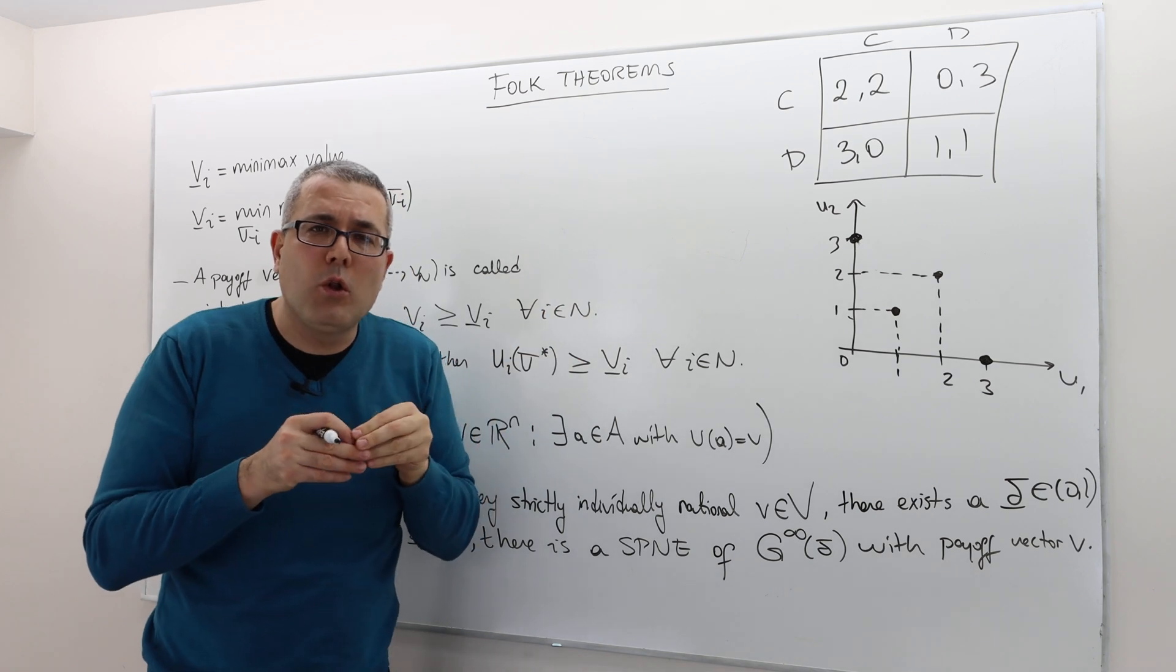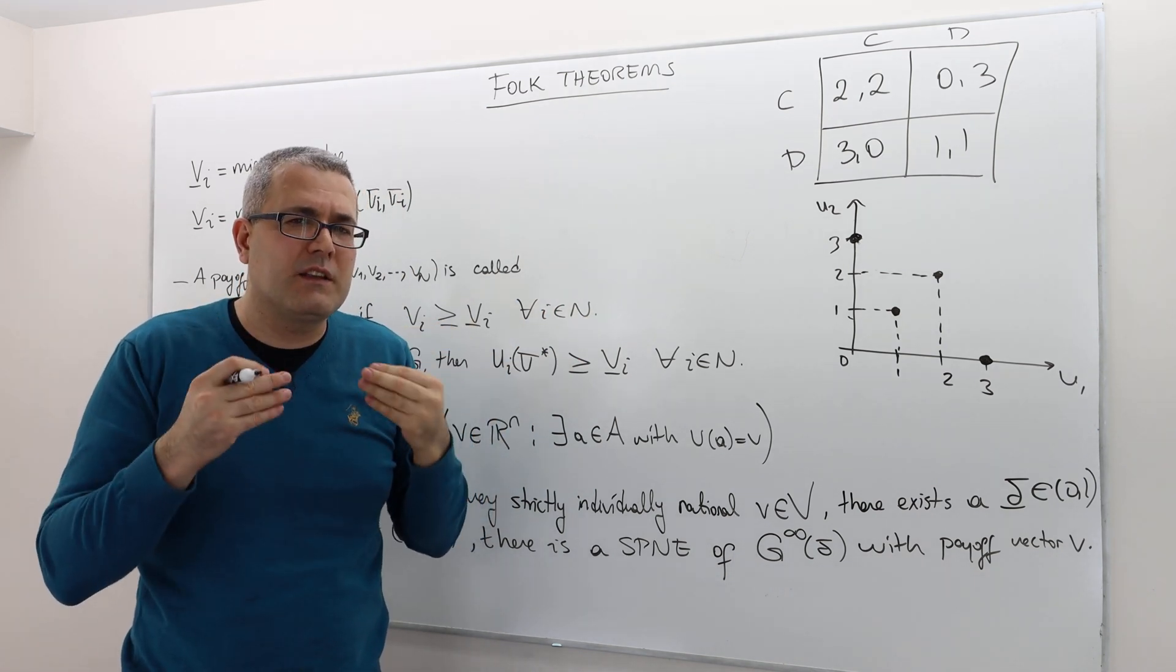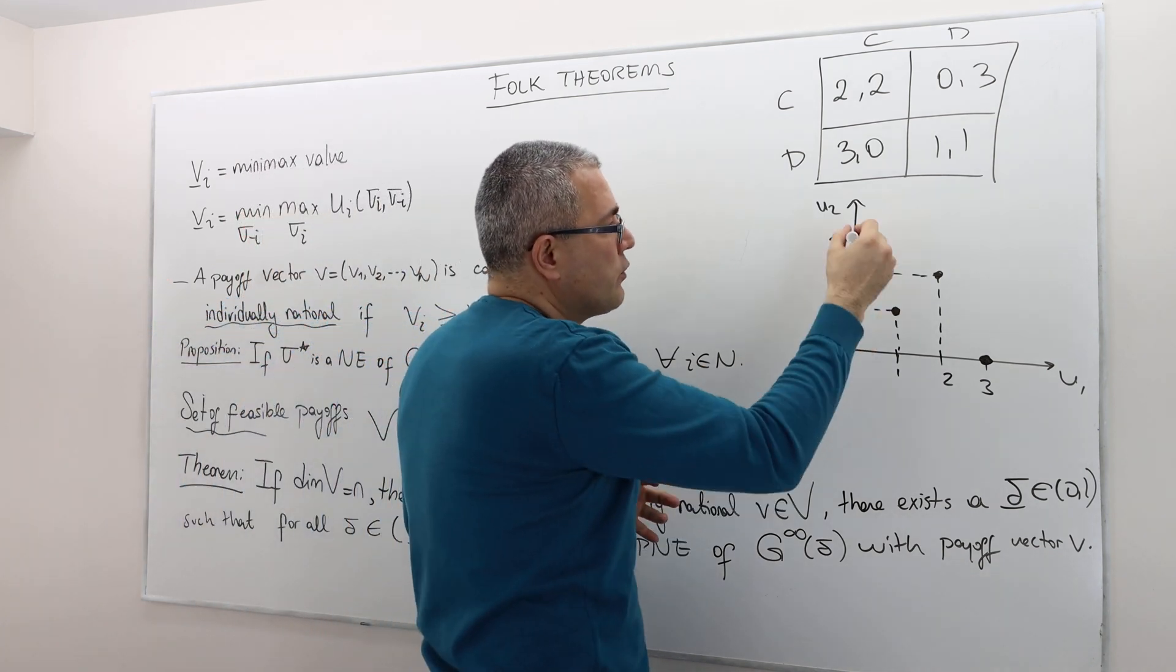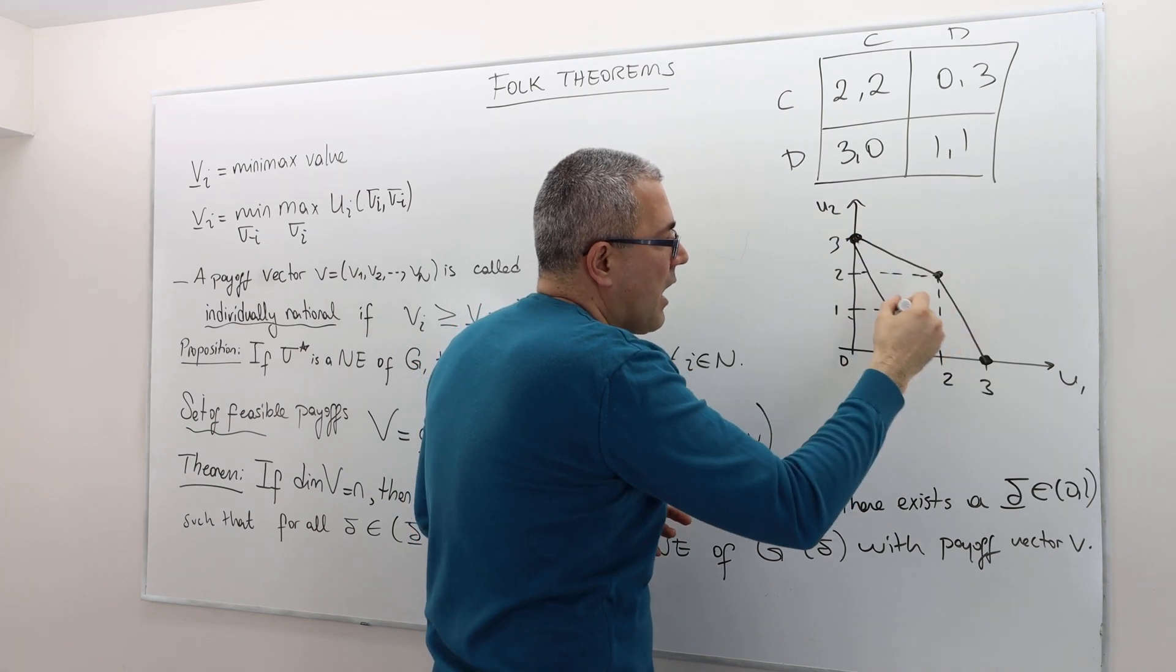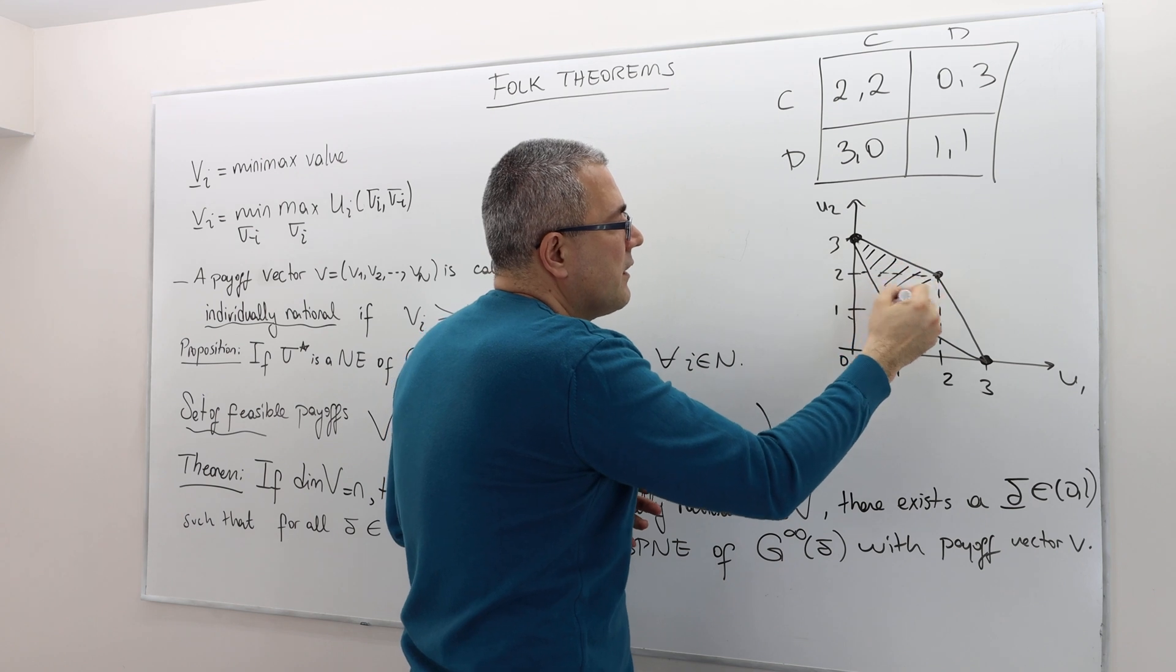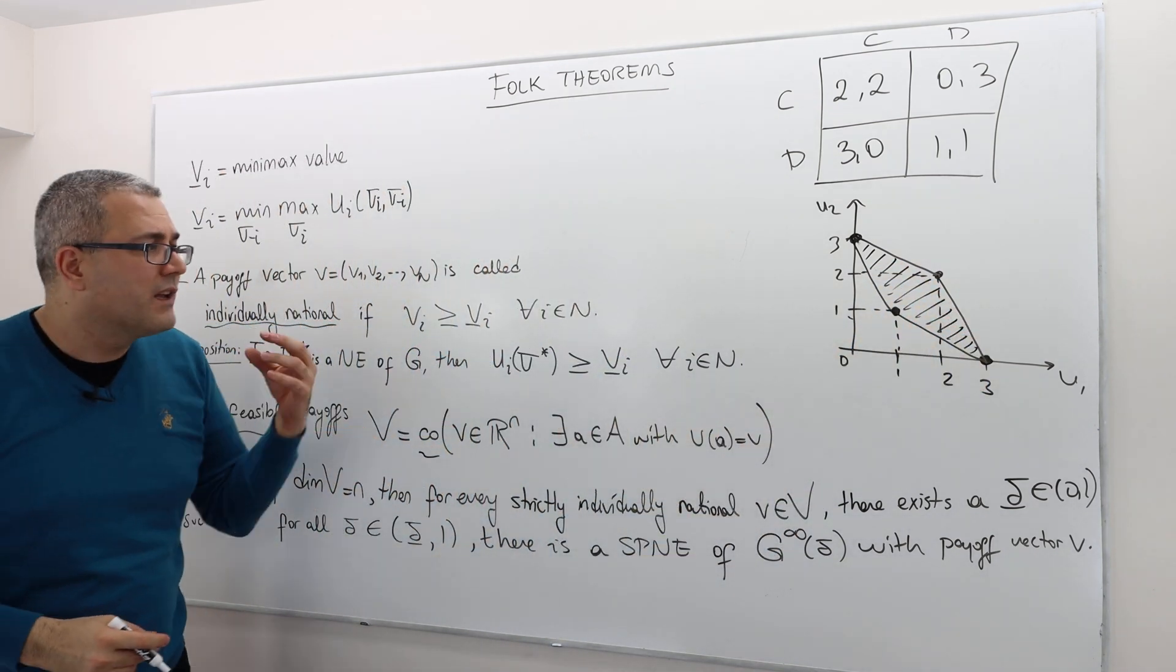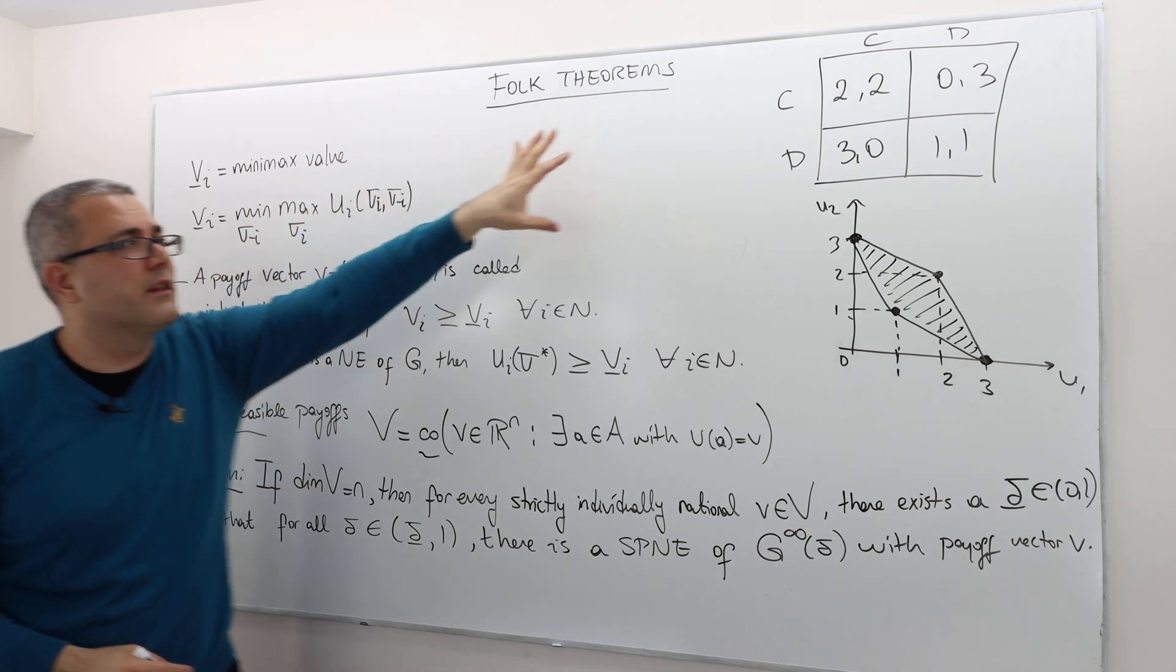So basically, it's the convex combination of all those four points. So this area is the convex hull or set of feasible payoffs, all right, for this game.